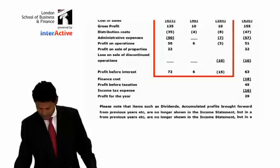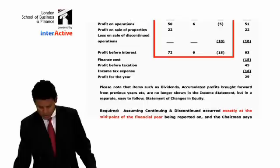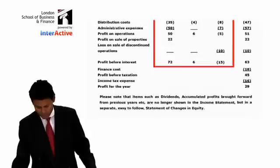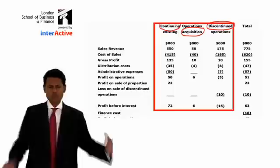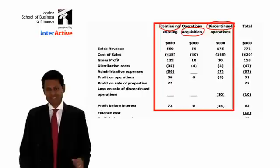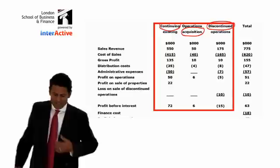Please note that items such as dividends and accumulated profits from previous years are no longer shown in the income statement, but in a separate, easy-to-follow statement of changes in equity — also known as SOCIE. But that's a subject for another day.